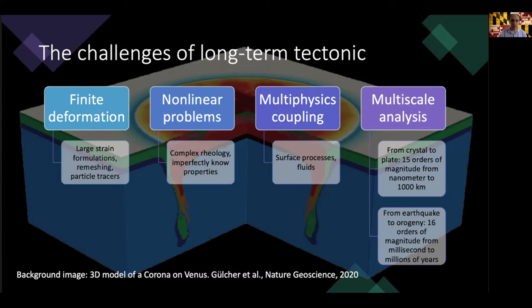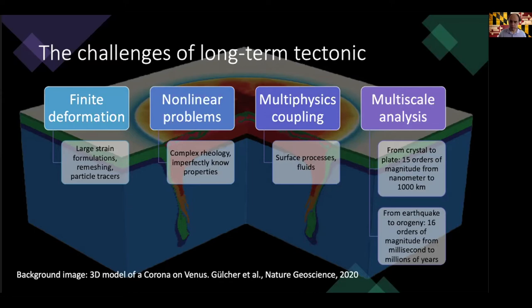We have to couple different physics — pretty much all of the examples I described involve coupling with a different system, whether it's surface processes or fluids. The scales we have to handle are enormous, going from a defect inside minerals at a nanometer scale to thousands of kilometers of plate boundaries. Temporally, processes range from milliseconds within an earthquake cycle to millions of years to develop an entire mountain belt.